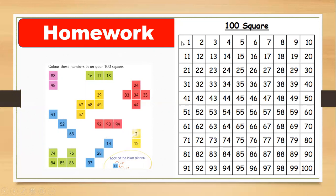Now look at number 18: the first digit is 1, so go to row 1 — and then 1 and 8 gives 18. Color this number green. This is your homework; you have to complete it and try to finish it. Thank you so much and have a nice day!